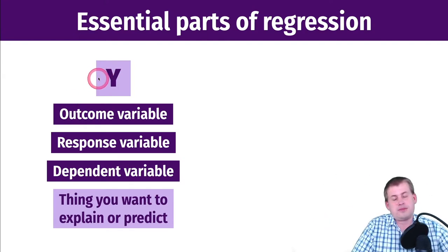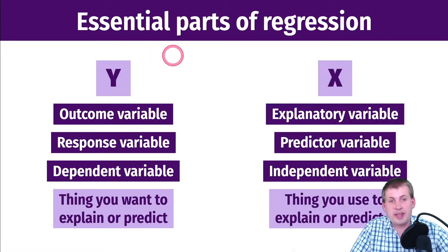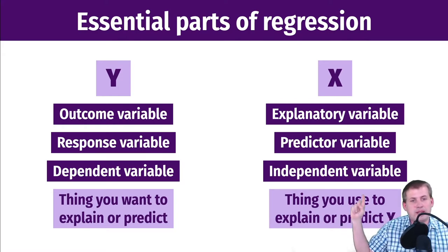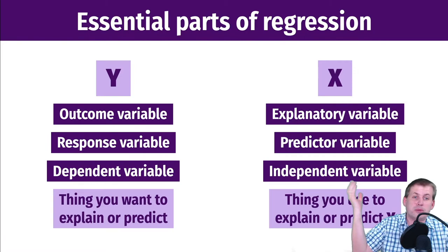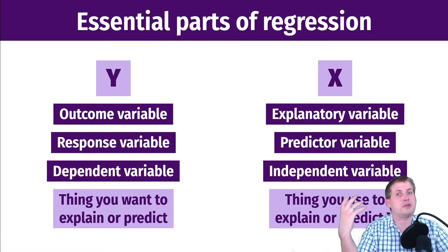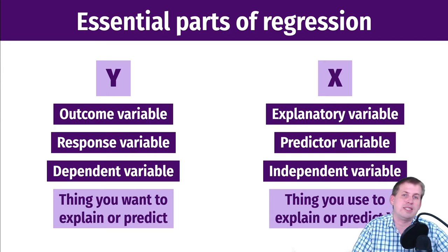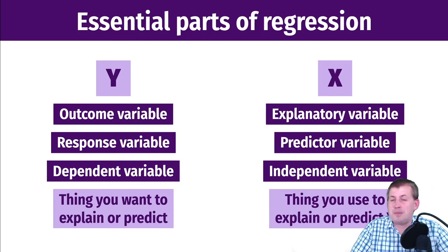I like thinking about outcomes and explanatory variables because that just makes more sense — you're explaining some sort of outcome. In this regression world, Y is the thing you want to explain or predict; it's the outcome you care about. X is the explanatory variable — the things you use to explain why. We call them predictors, independent variables, whatever you want — but it's the thing you use to predict that outcome. What I want to do is give you some practice identifying what is an outcome and what is explanatory.